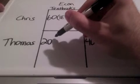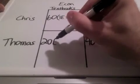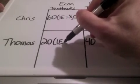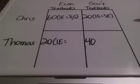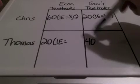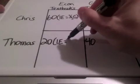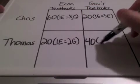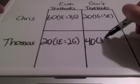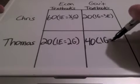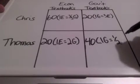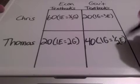And for Thomas, we do the same thing. For every one economics textbook, Thomas can produce 40 divided by 20, which would be two government textbooks. And for every one government textbook, Thomas can produce 20 divided by 40, which would be one-half of an economics textbook.